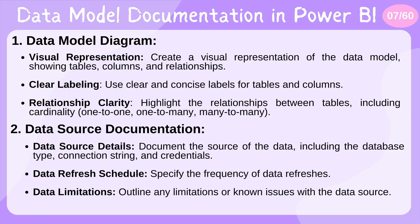The first step in data model documentation is the data model diagram — a visual representation. You have to show your tables, the columns you use, and how the relationships are connected. Use clear and concise labels for tables and columns, and highlight the relationship cardinality between tables: one-to-one, one-to-many, many-to-many, and many-to-one, for better clarity.